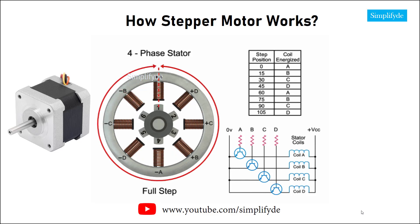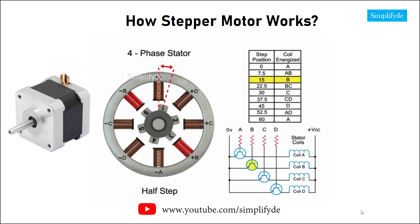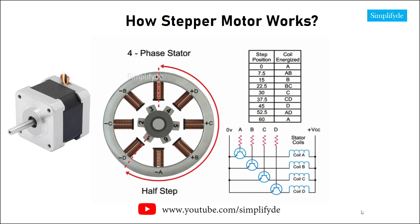Twenty-four steps are required to make a full rotation at fifteen degree increments. For half-step mode, the stepper motor's resolution can be doubled by altering the switching of coils. Half-stepping occurs when one winding is energized and then two windings are energized alternately, causing the rotor to rotate at half the distance. Switching coils in this combination will rotate in the reverse direction. As you can see in this example, forty-eight steps are required to make a full rotation at seven point five degree increments.